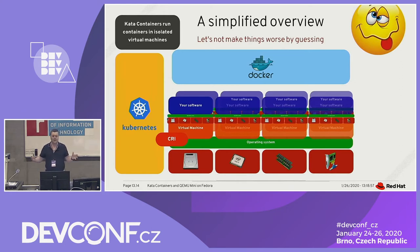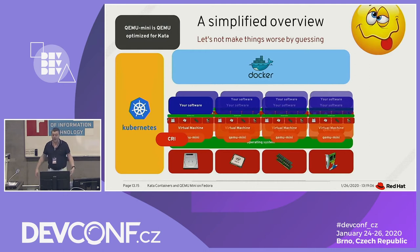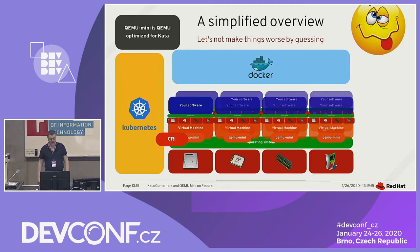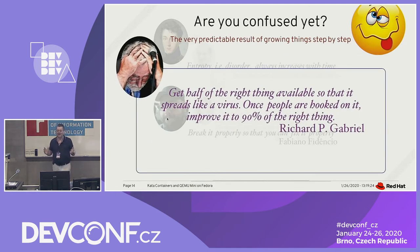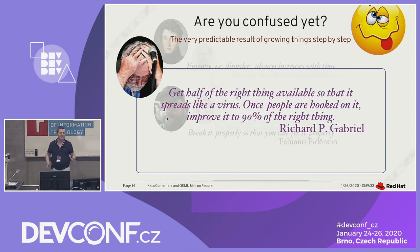QEMU Mini is QEMU optimized for Kata — just trying to have something that does what we need for that use case. The predictable result of open source software is that we grow things step by step, with no giant design. And so that's exactly what we expect — but now we have to make it work. That's the bad news.